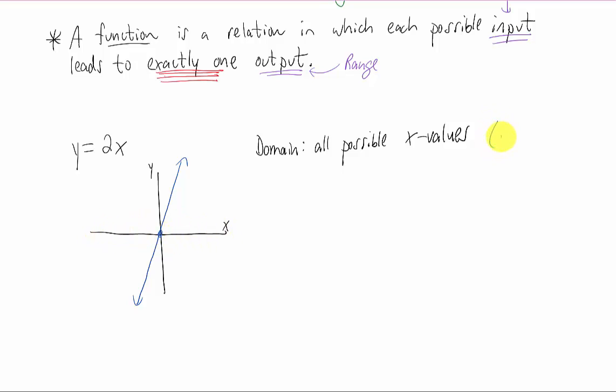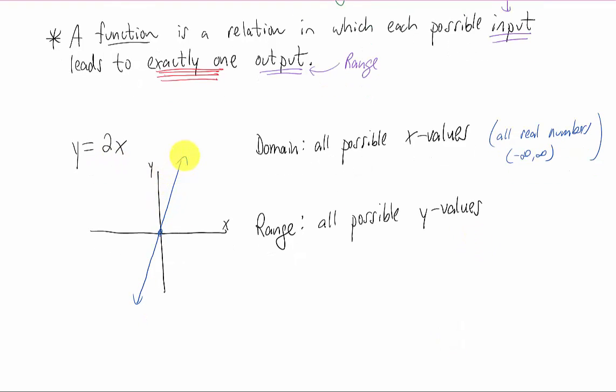As a side note, we call this all real numbers, or we could say negative infinity to infinity. The range is all the outputs of this function, which are y values. And since we know that this line could take on any y value possible, the range of this function is also all real numbers, or negative infinity to infinity.